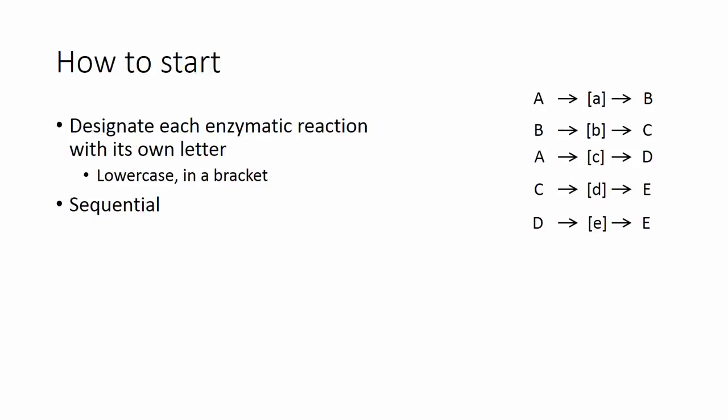So how do we start? For each enzymatic reaction that we have in this list, we designate it with its own letter. In this case, I go A, B, C, D, E. They're lowercase letters in a bracket like that. And I've put them in sequential order. Or they're in sequential order and I've put the letters in sequential order as well.